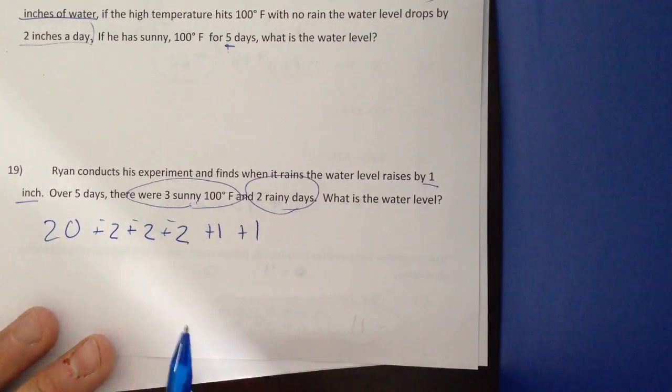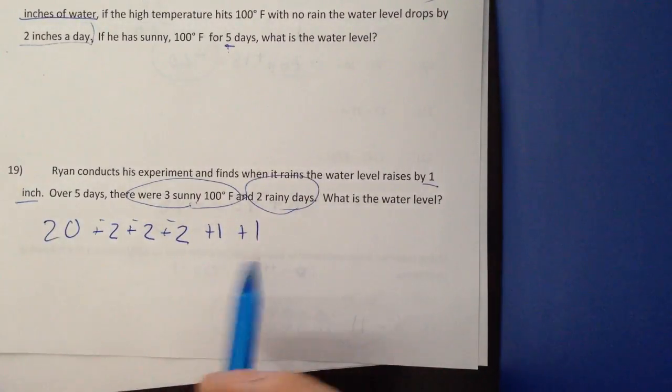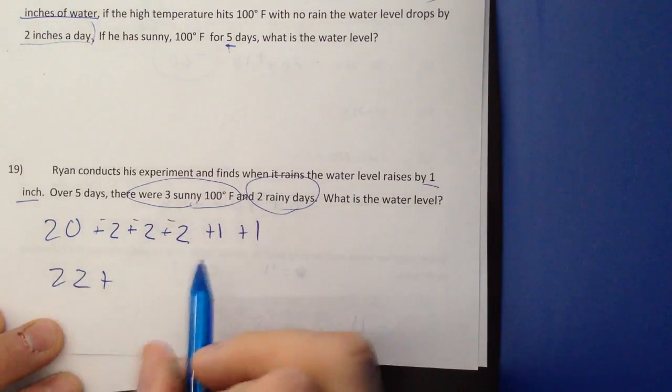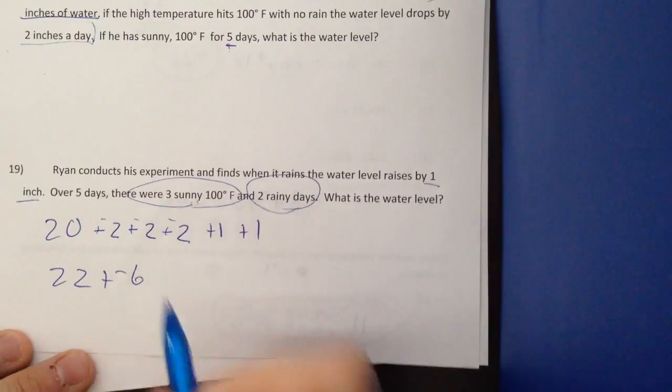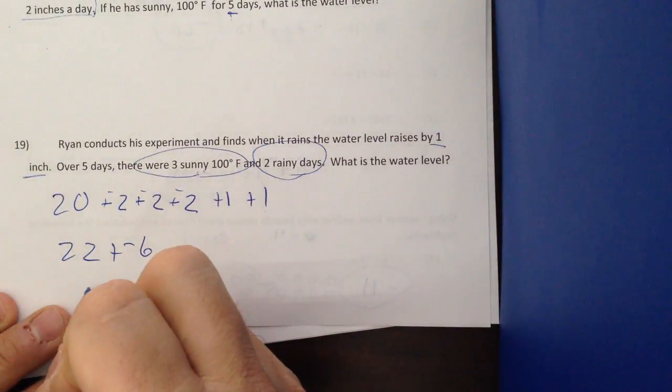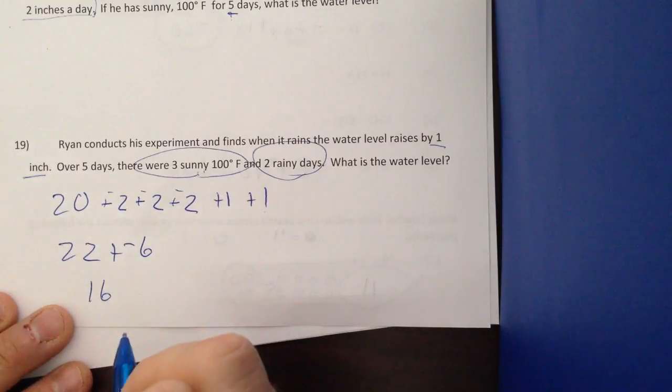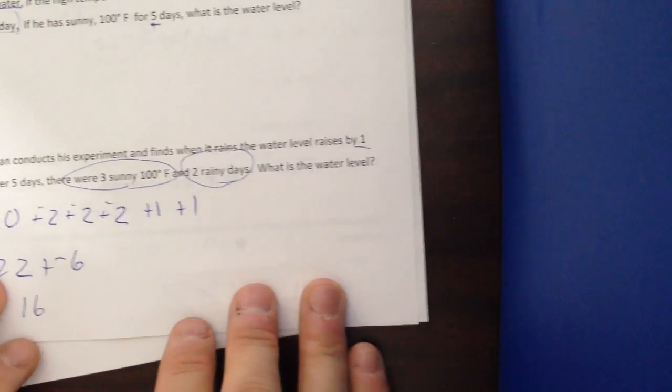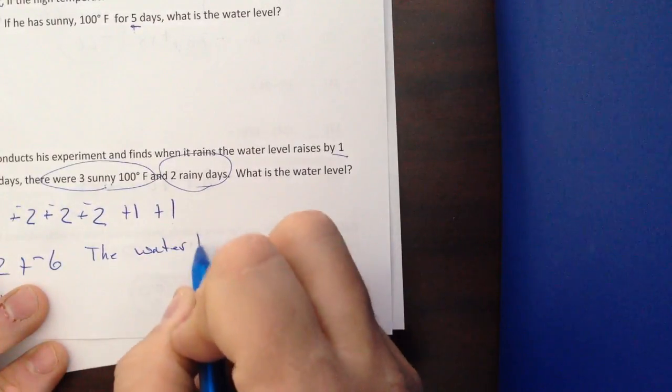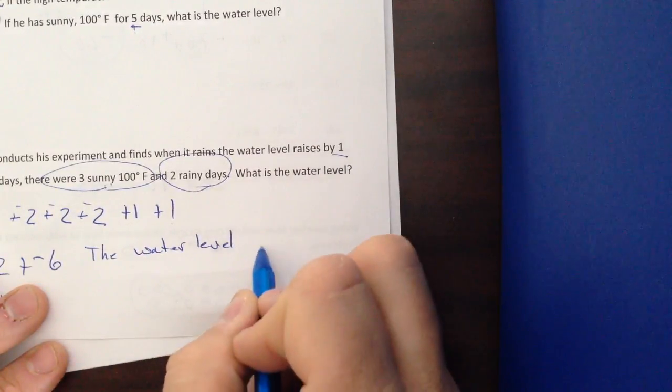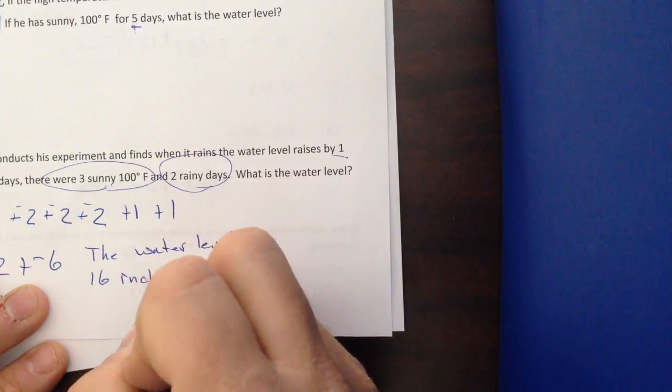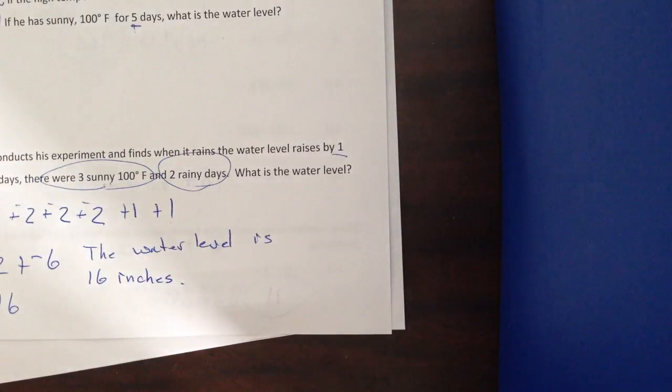Now, I could put this all together for addition. You may not do this, but I'm going to do this. So I can move numbers anywhere I want. So I can take these 2 back here and I can add them up here. So it's going to give me 22. Plus, I'm going to put all these negatives together, negative 6. 22 plus negative 6 is 16. So then I have to actually answer the question. The water level is 16 inches.